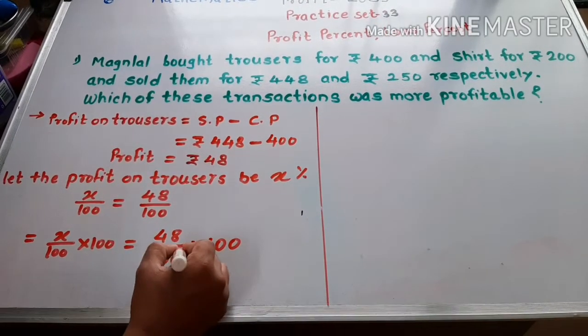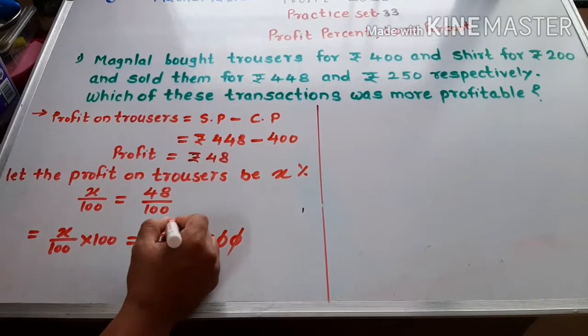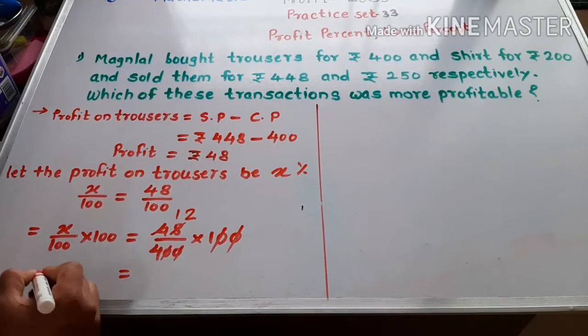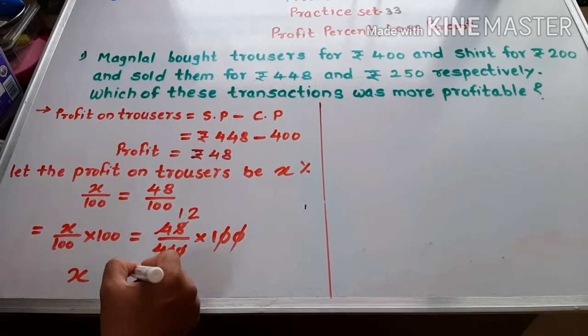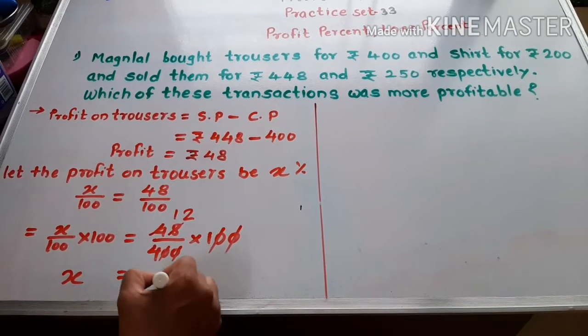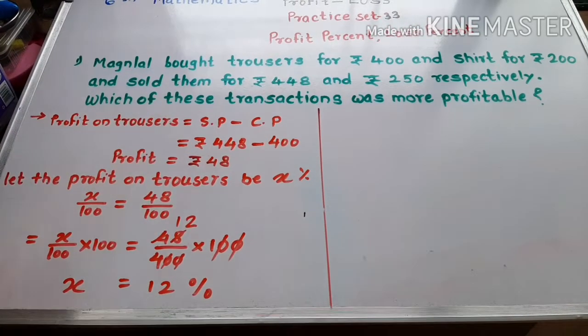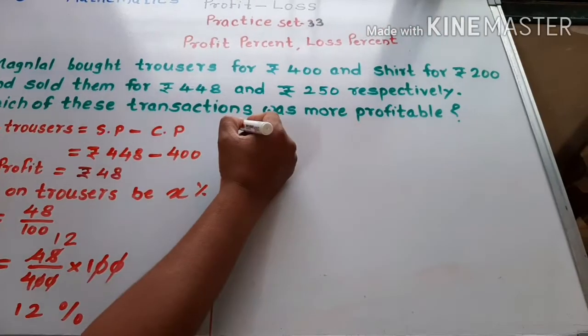We cancel zeros. 4 ones are 4 and 4 twos are 8. X is equal to 12% profit on this transaction.